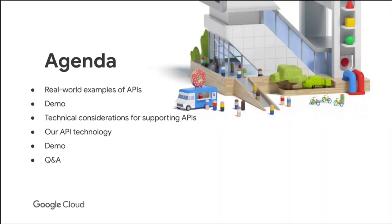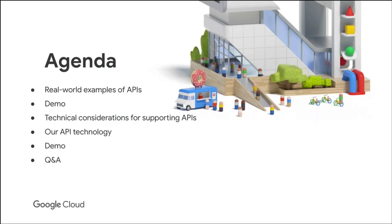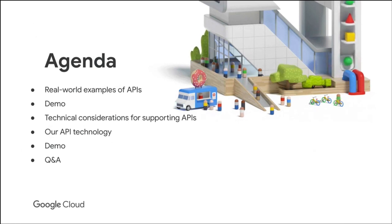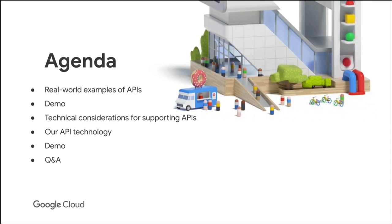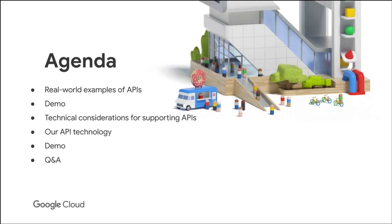We're going to start with some examples about how people have actually used APIs to solve real business problems. Then we'll talk about what this means by showing you a demo of what it means to be a consumer of an API. Then we'll go into more detail about the technology, followed by another demo showing how you actually use Apigee to create and manage API programs. Finally, we'll have time at the end for questions.